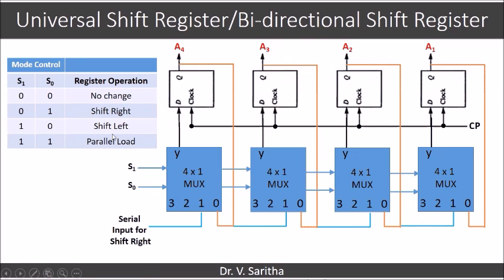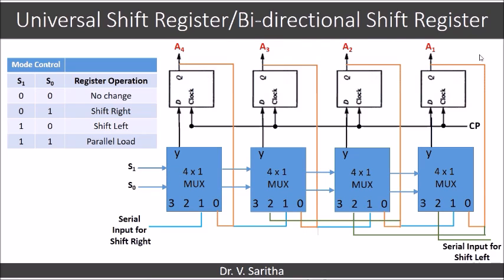Similarly, for 1,0 it is shift left operation. A3 will go to A4, A2 will go to A3, A1 will go to A2, and A4's bit will be lost. A new bit will be entered into A1. So the new bit enters A1, A1 is given to A2, A2 is given to A3, and A3 is given to A4. For S1, S0 equal to 1,1 it is parallel load operation. We give the values of I1, I2, I3, I4 to the third input of each multiplexer, which will be loaded parallelly into A1, A2, A3, A4 when the clock pulse is given.